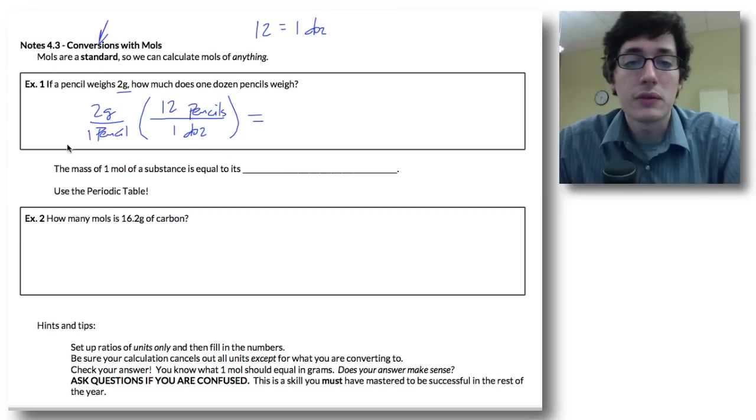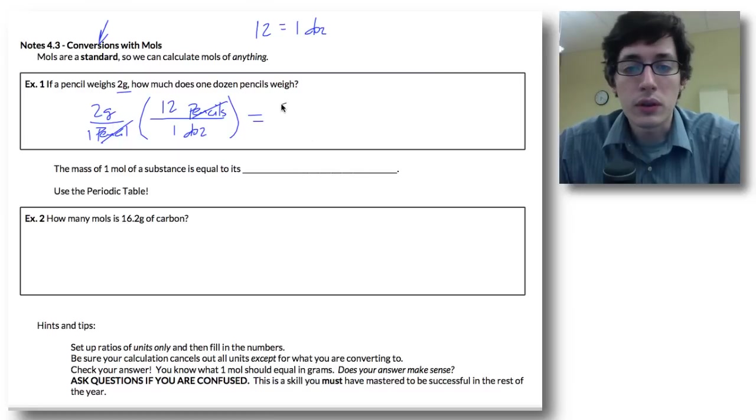So if we multiply this through, pencils, I've got pencils on the bottom here and on the top here so they cancel out. 2 times 12 is 24, divided by 1 leaves me with 24, and this is grams per dozen.